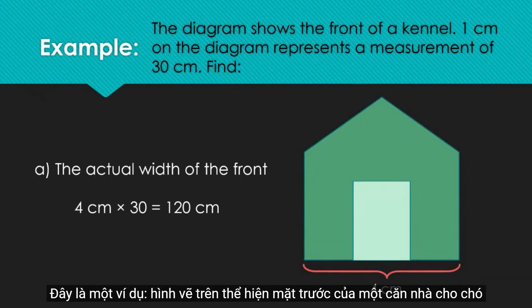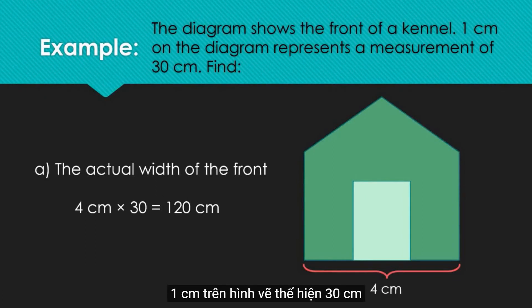This is an example. The diagram shows the front of a kennel. 1cm on the diagram represents a measurement of 30cm. Find the actual width of the front.